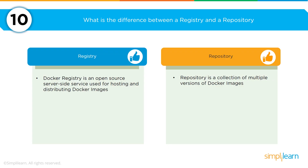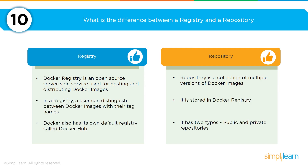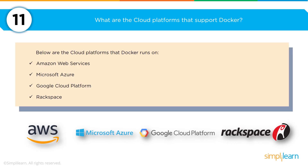What is the difference between a registry and a repository? A Docker registry is an open-source server-side service used for hosting and distributing Docker images. A repository is a collection of multiple versions of a Docker image within a registry — users can distinguish between Docker images with their tag names. Docker has its own default registry called Docker Hub. A repository has two types: public and private, so you can also create your own enterprise registry.